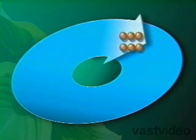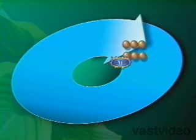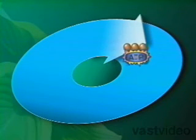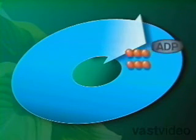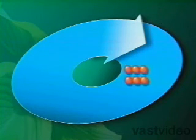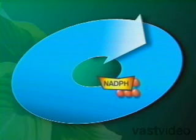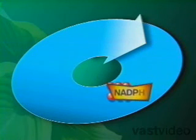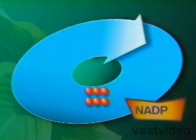As these molecules progress through the Calvin cycle, they are changed by chemical reactions driven by the energy of ATP and NADPH. Eventually, they form molecules of PGAL.